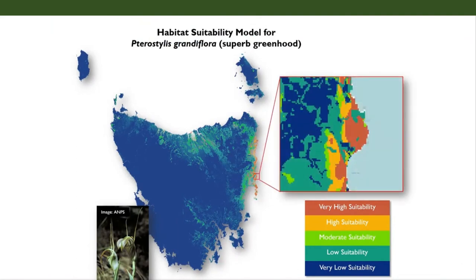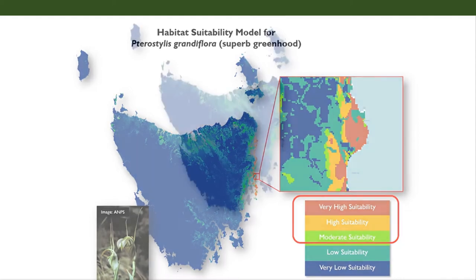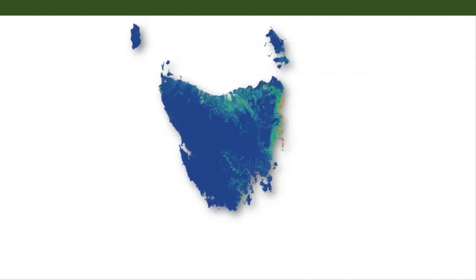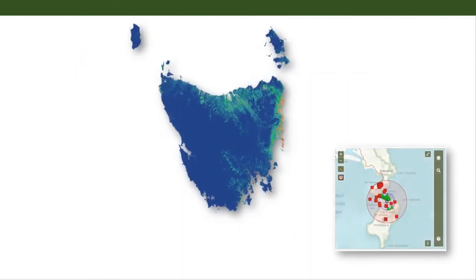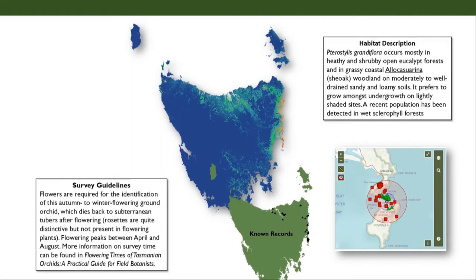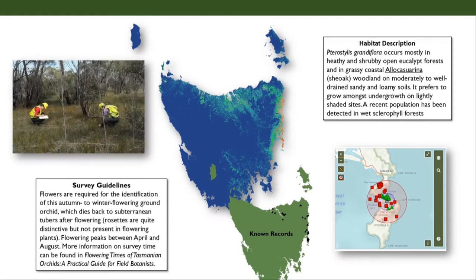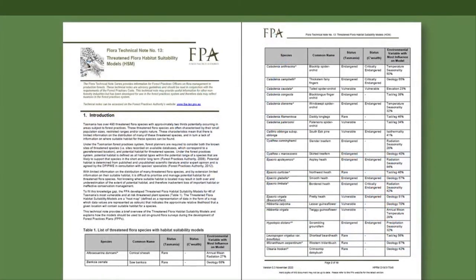Areas of moderate, high and very high suitability that fall within an operation area indicate the areas of highest priority for surveying for the target species. These models can be used in combination with information from a BVD report, such as known records, habitat descriptions and survey notes, allowing forest planners to target priority areas when undertaking harvest area surveys. Flora technical note number 13 gives a full rundown of how the models were developed and exactly how to use them.